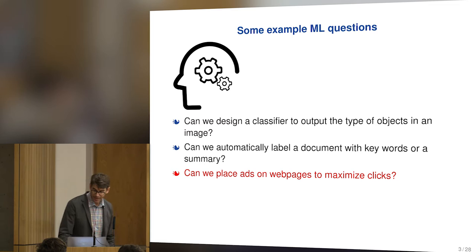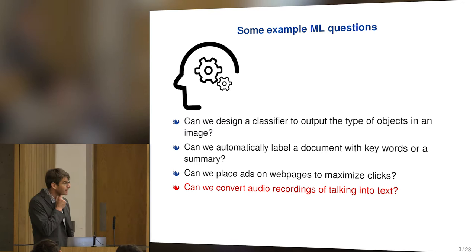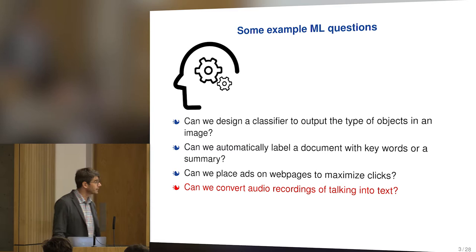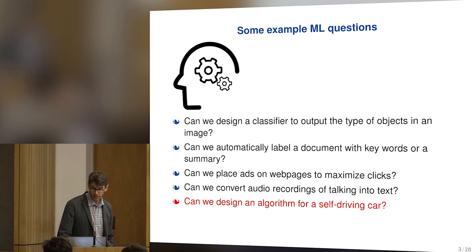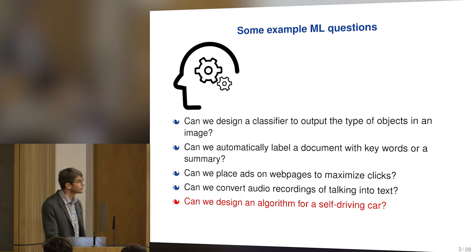Can we place ads on web pages to maximize clicks? That's been a quite popular type of problem — a lot of my students go to Google and the tech industry working on these types of problems. Another thing that's gotten dramatically better in the last five to ten years: can we convert audio recordings into text without errors? And of course, one thing that's been really in the news is can we design an algorithm for a self-driving car?